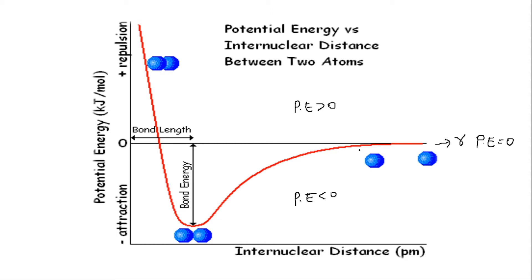Let us look at three situations one by one. In the first situation, the distance between two atoms is very large. When the distance is very large, the attractive forces won't dominate over repulsive forces. As r tends towards infinity, potential energy tends towards zero — as seen from the graph where the curve asymptotically touches the x-axis, representing a configuration of zero potential energy.